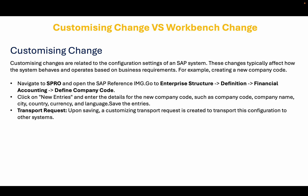Let's see how it's usually done in the SAP system. Firstly, you will navigate to transaction SPRO and open the SAP reference IMG, which is the implementation guide. Then go to Enterprise Structure, Definition, Financial Accounting, Define Company Code. Then click on New Entries and enter the details for the new company code, such as the company code, company name, city, country, currency, and language, and then save those entries. Upon saving those entries, a customizing transport request is created to transfer this configuration to other systems.